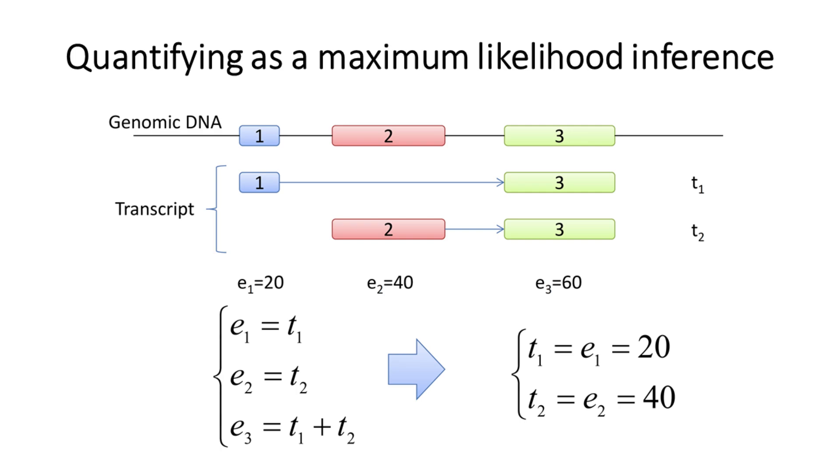In principle, the expression level of transcripts can be inferred directly from the expression levels of exons once the transcript assembly is done correctly and the expression levels of these exons have been correctly normalized as described in the previous unit. For example, assume that we can infer from the three exons on the genome the two transcripts t1 and t2. Meanwhile, assume that the normalized expression level of each exon can be determined: e1 equals 20, e2 equals 40, and e3 equals 60.